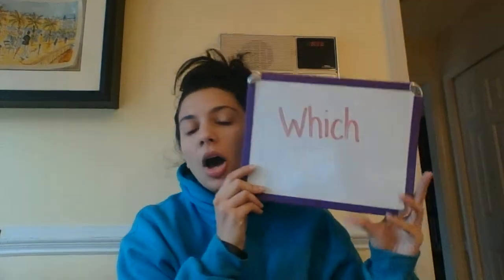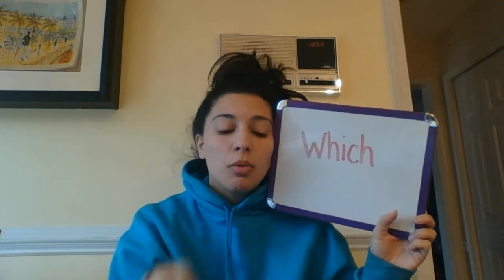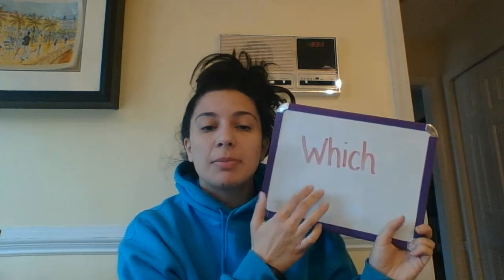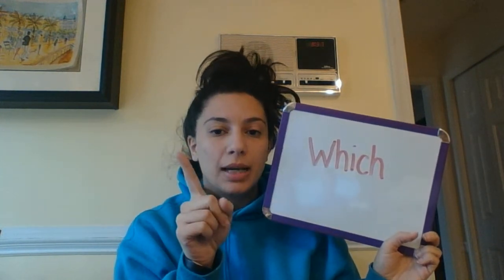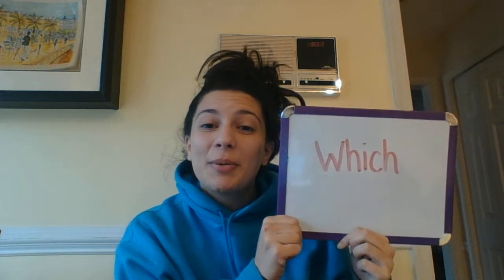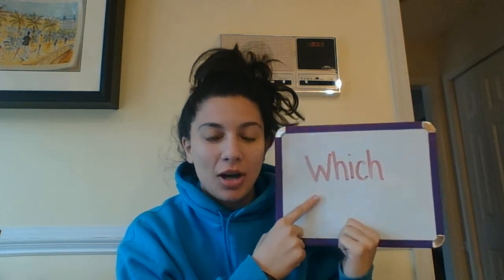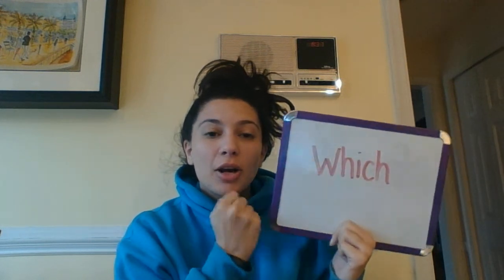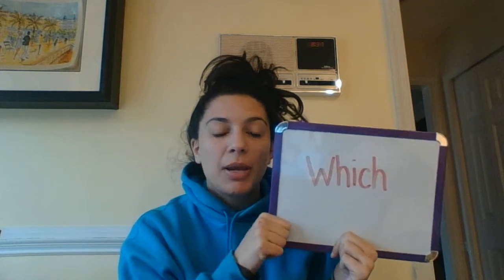Now that we have done that three times, we are going to write this word down on a piece of paper or your whiteboard one time. Go ahead and pause my video while you do that, and then come back when you are ready to go. If you unpause my video, that means you are ready — you have the sight word written down. Hold it down in front of you and go W-H-I-C-H, spells which.